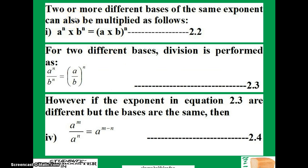When you have two or more different bases of the same exponent, you can also multiply them. And how do you do that? You have two different bases here, a and b, but the exponents are the same. Just factorize the exponent, and it is equal to a times b raised to power n. That is the second law.